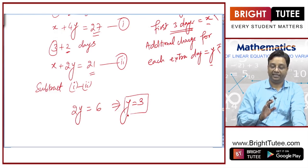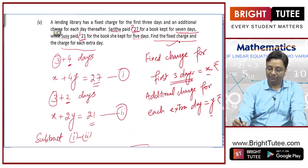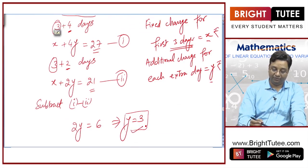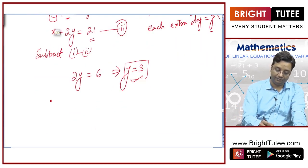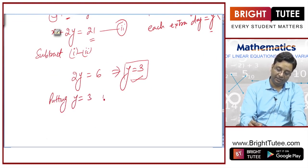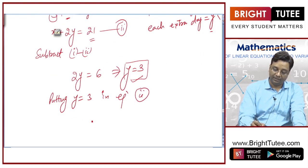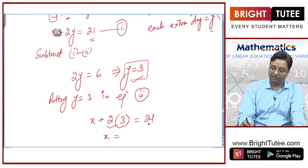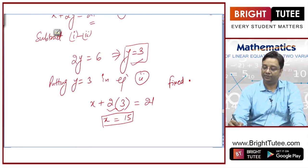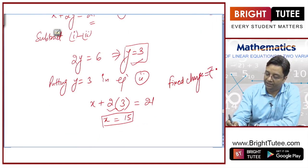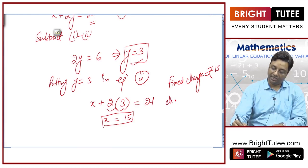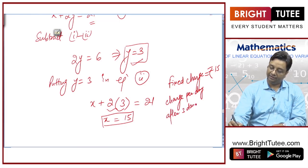So, the additional charge for each day is rupees 3. Now, putting y equal to 3 in equation number 2: x plus twice of 3 is equal to 21. So, x is equal to 21 minus 6, which is 15. Fixed charge is rupees 15 for the first 3 days, and the charge per day after 3 days is rupees 3.